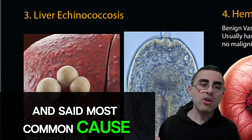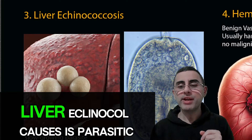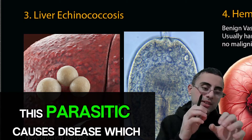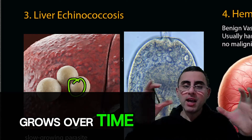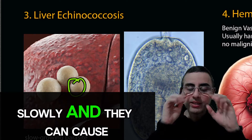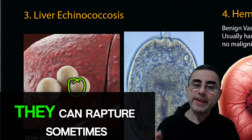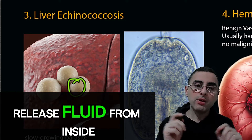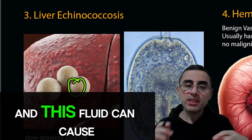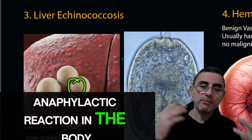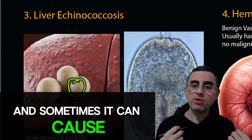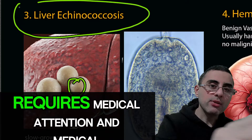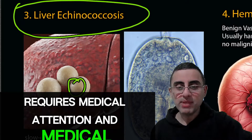The third most common cause is liver echinococcus, which is a parasitic infection. This parasite causes cysts that grow slowly over time and can cause symptoms. They can also rupture, and when they rupture they release fluid that can cause an anaphylactic reaction in the body. In some cases this can cause death of the patient, which is why liver echinococcus requires medical attention and treatment.